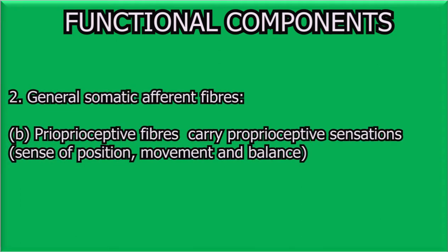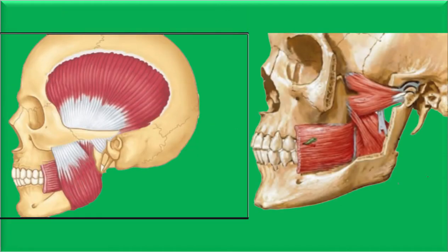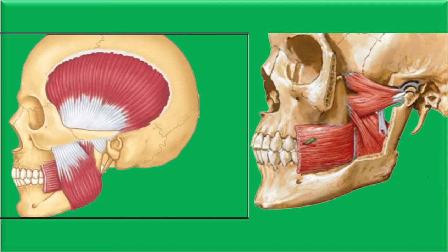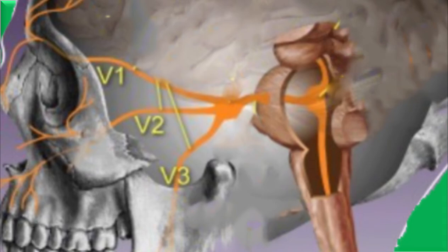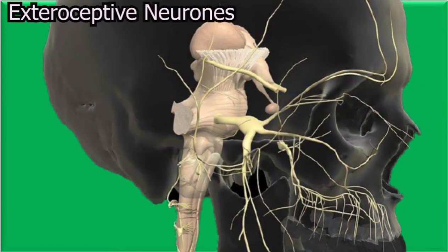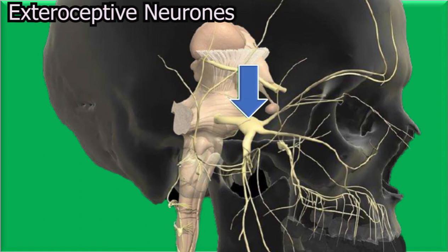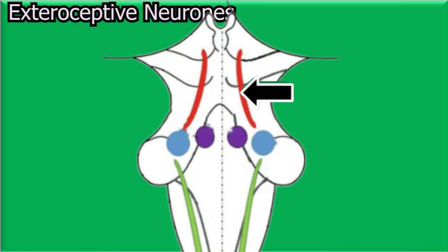The other set of fibers are the proprioceptive fibers. These carry proprioceptive sensations — that is, the sensation of position, movement, and balance — from the muscles of mastication, the temporomandibular joint, and teeth, and relay this sensation to the mesencephalic nucleus at the midbrain. The exteroceptive neurons have their cell bodies located in the trigeminal ganglion, while the proprioceptive neurons have their cell bodies all the way into the brainstem in the mesencephalic nucleus of the trigeminal nerve.